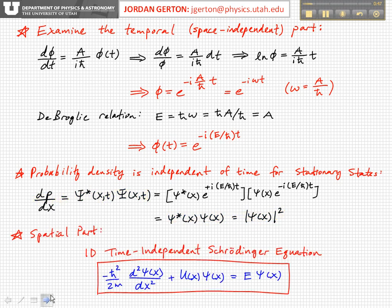And now finally, if we plug in for this constant A, which we now have found to be E, and we plug that back into the spatial part of the Schrödinger equation, then we're left with minus h-bar squared over 2m times d squared psi dx squared plus u of x psi of x equals E psi of x. So this is the one-dimensional time-independent Schrödinger equation.